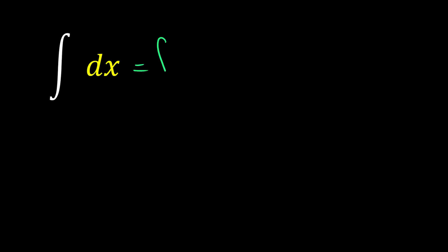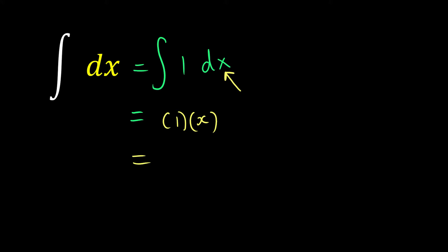If you are integrating a blank function with respect to something, eventually there is a hidden 1 inside the functions. So what is the integration of 1? Since 1 is just a constant, the integration of a constant is itself times the variable you are integrating with respect to. We are integrating with respect to x, that's why we have x. If it has dA, it becomes A; if dB, it becomes B. But don't forget these are indefinite integrals, which is why we have plus C. So x times 1 is just x plus C.